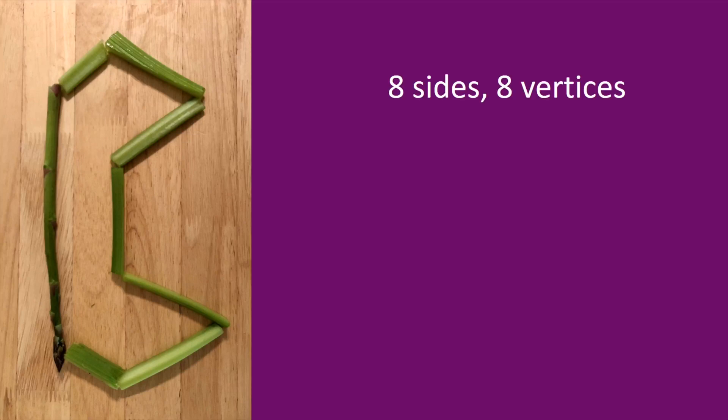Count the sides and vertices. Eight sides, eight vertices. What is this shape called? An octagon. We can remember that because an octopus has eight legs. An octagon has eight sides and eight vertices.